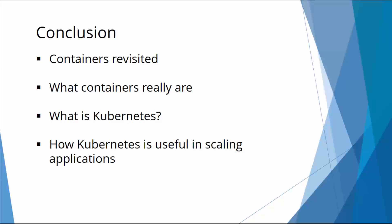In conclusion, we talked about containers — what they are and their shortcomings. They're simply kernel namespaces; they can't really do anything on their own and cannot scale themselves. So we need Kubernetes to do that. We also talked about how Kubernetes is useful in scaling these applications, and a few new terms such as pods, service, and labels as far as Kubernetes is concerned. Go over some of these terms and understand them.